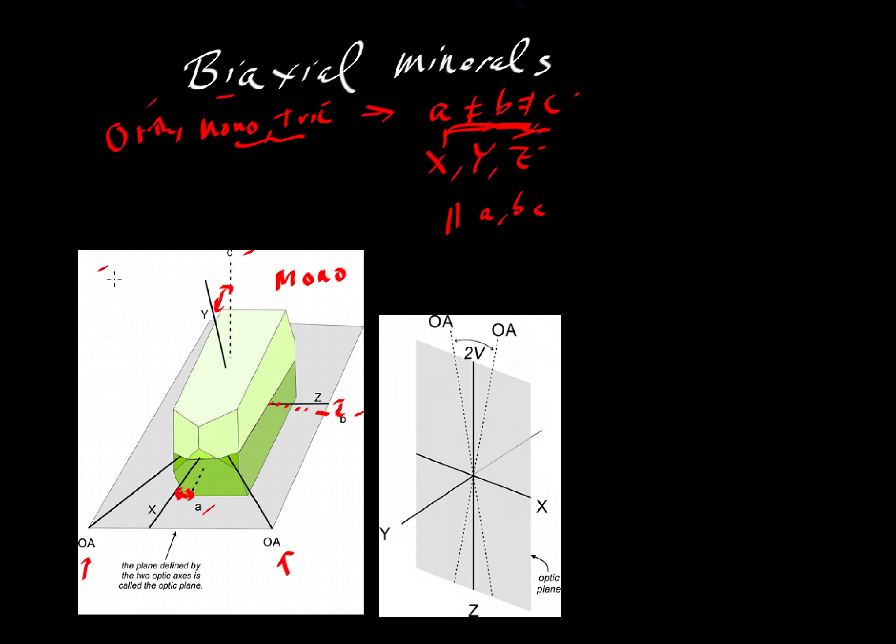So every, and this is why when you look in Deerhali and Zussman, you'll see diagrams that show exactly this relationship. So you can see the relationship between Y and whatever it's closest to, A, B, or C, et cetera.